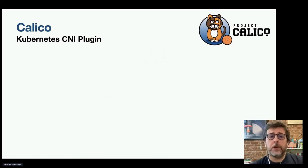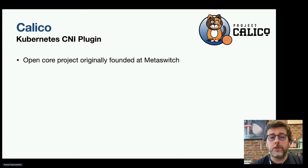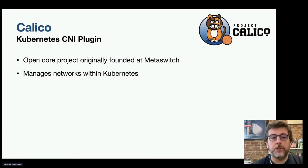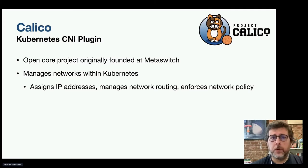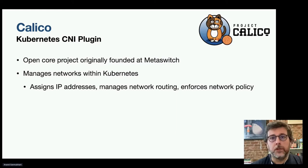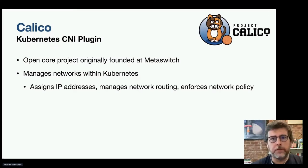The next project is Calico. Calico is an open core project originally founded at MetaSwitch for OpenShift networking, but it's since evolved into managing networks within Kubernetes. It does things like assign IP addresses, manage network routing, and enforce network policy. Calico has a modular architecture where different components are responsible for different things like IP address management, configuring routing, BGP configurations, and even the data plane itself.